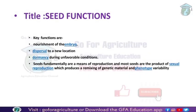Seeds have many functions, but the key functions are: first, nourishment for the embryo so the embryo can nourish itself to help growth; second, dispersal to new locations to grow the population. Fundamentally, seeds are meant for reproduction, and most seeds are the product of sexual reproduction. Seeds are also a fundamental resource for genetic material and phenotypic variability.